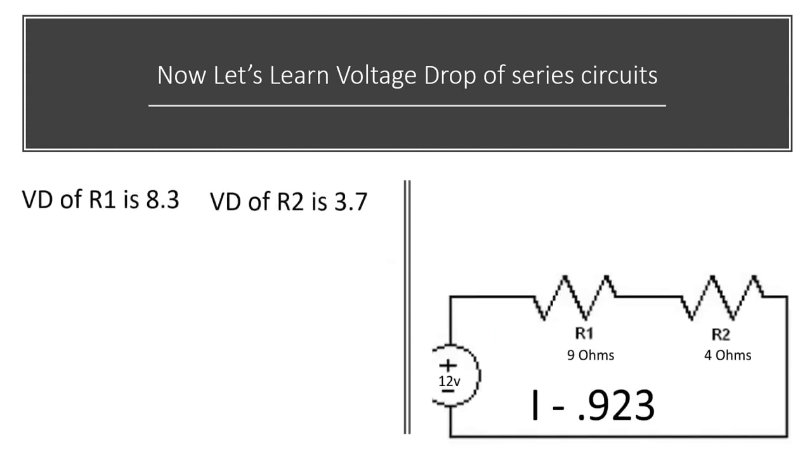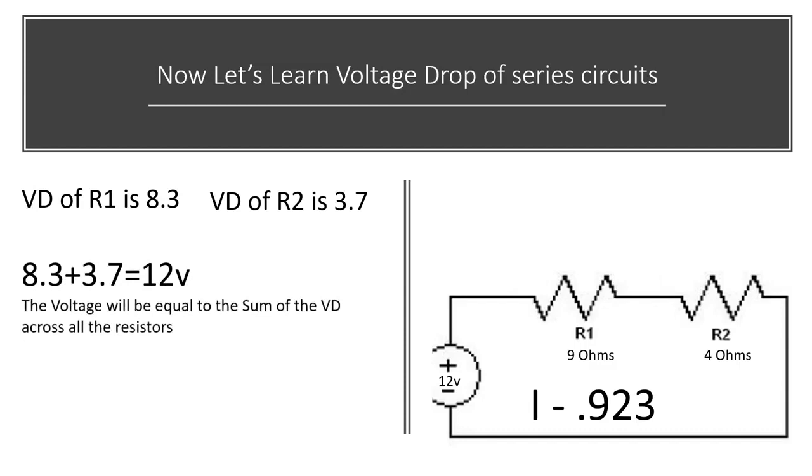A quick recap. The voltage drop of R1 is 8.3. The voltage drop of R2 is 3.7. 8.3 plus 3.7 is going to equal 12 volts. The voltage will be equal to the sum of the voltage drop across all resistors, and that's how you double check your work.